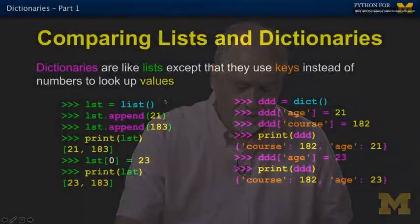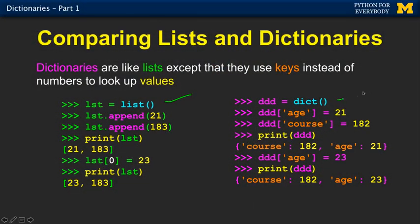It's really a lot like lists. If we look at an example from a previous chapter on lists, we make an empty list, we make an empty dictionary. We add into position zero, which is, because it's empty, a 21, and we put in position one a 183. Here we put into this dictionary under the key age 21, and into this dictionary under the key course, we put in 182.